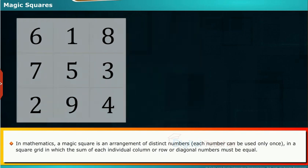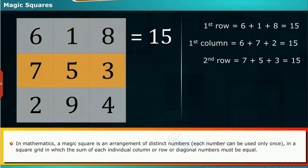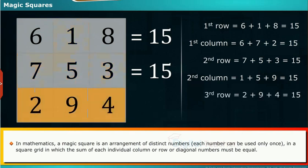Calculation of first row: 6 plus 1 plus 8 equals 15. First column: 6 plus 7 plus 2 equals 15. Second row: 7 plus 5 plus 3 equals 15. Second column: 1 plus 5 plus 9 equals 15. Third row: 2 plus 9 plus 4 equals 15. Third column: 8 plus 3 plus 4 equals 15.